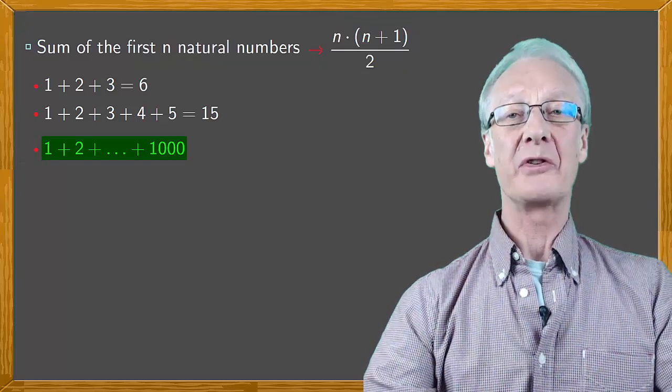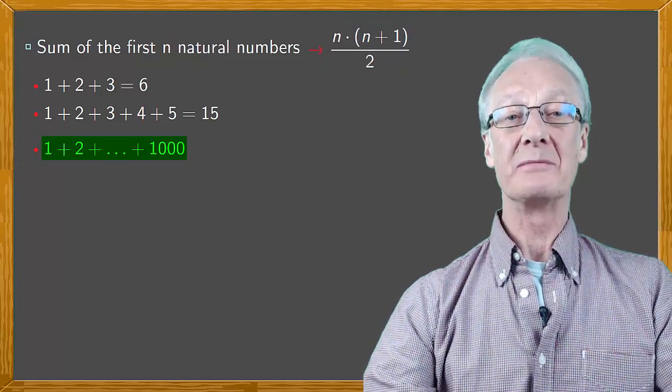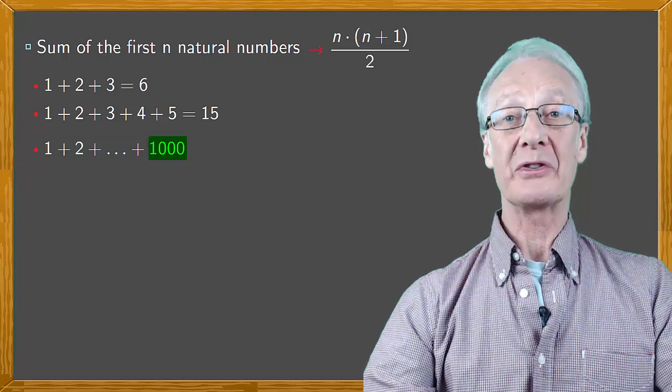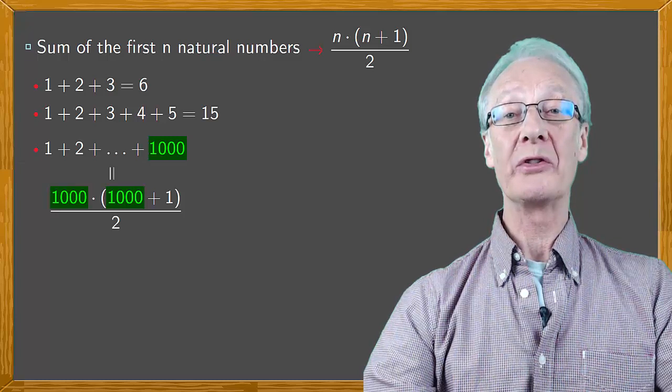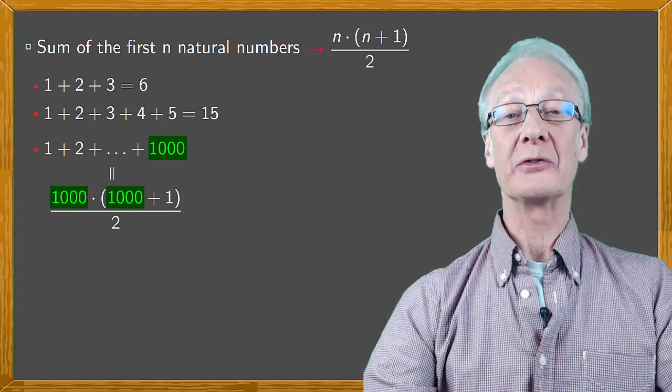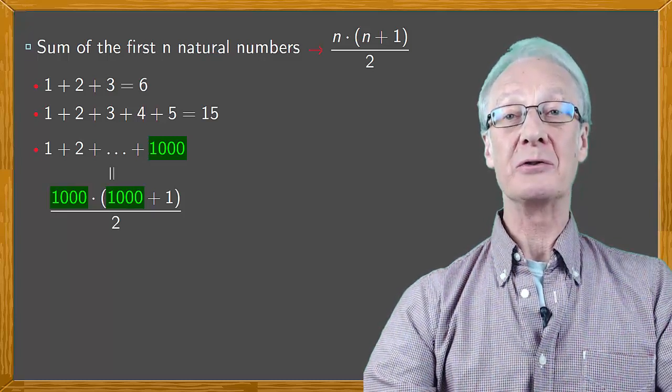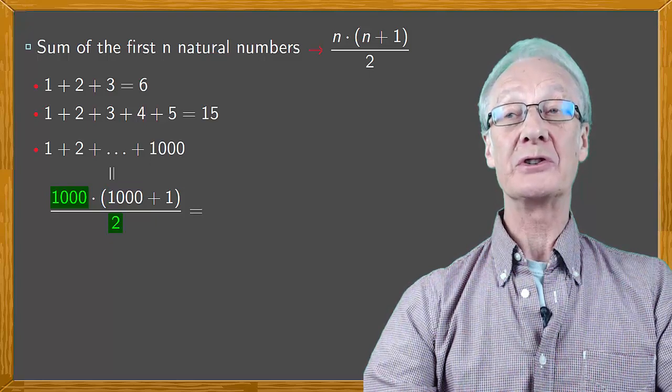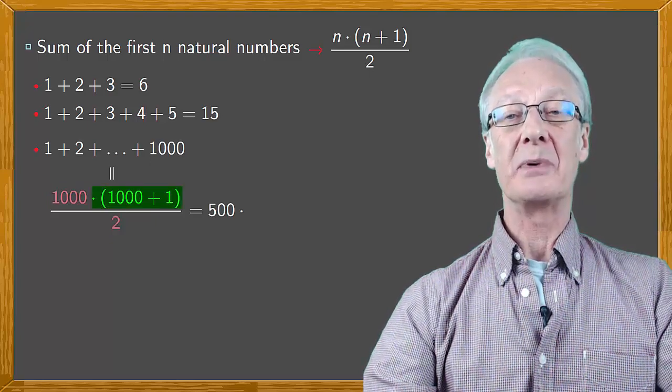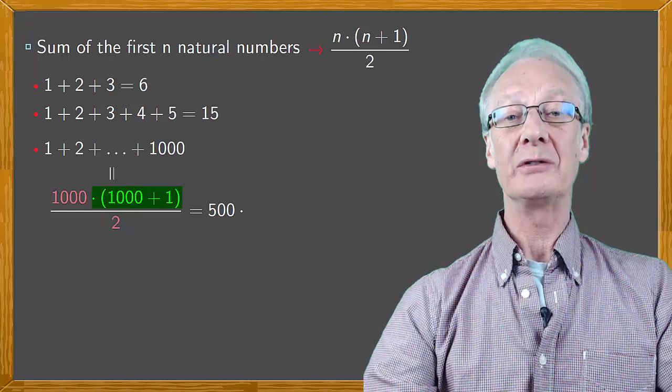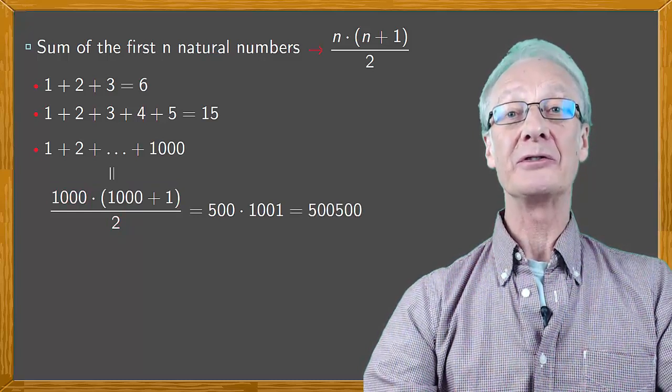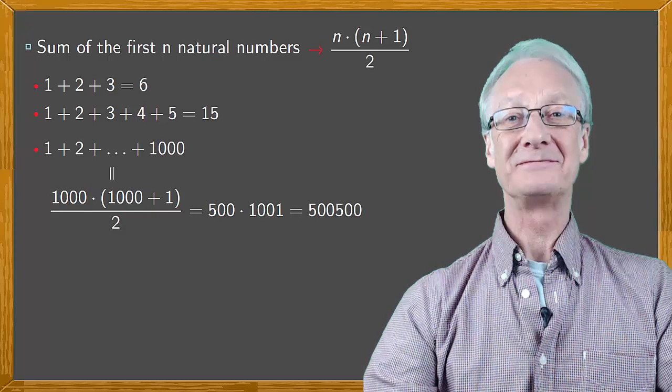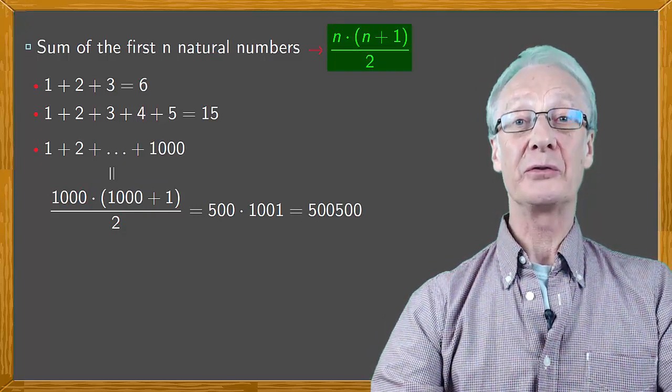To obtain the sum of the first 1,000 natural numbers, we put n equal to 1,000, and obtain our result by calculating 1,000 times 1,000 plus 1 divided by 2. 1,000 over 2 is 500, times by 1,000 plus 1, or 1,001, gives 500,500. It's a very useful formula.